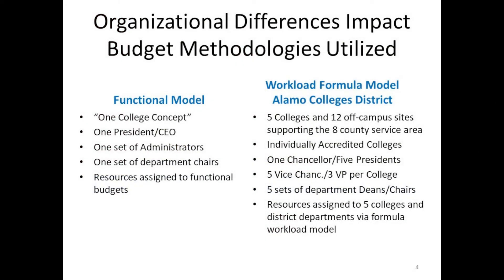How the organizational structure affects you: I've also presented with a peer from Austin Community College to contrast our structures. In their structure, they're a one-college model — one president CEO, one set of administrators, one set of department chairs. It's a very linear structure. For budget purposes, their budget can basically build all those functional accounts, set all the assumptions, and set the budget. It can be much easier mechanically in how you look at the dollars.